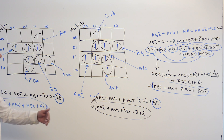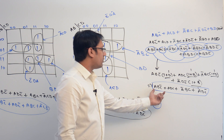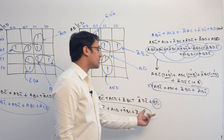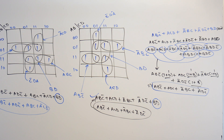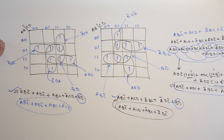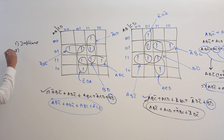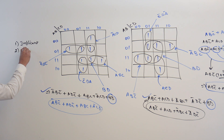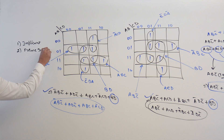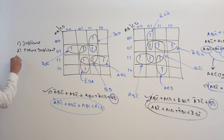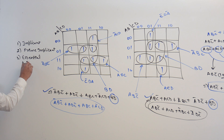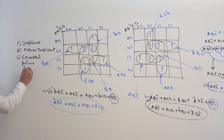Now, to understand why we are having this BD in this particular expression and how we can minimize it, we need three concepts. We need to learn what is an implicant, what is a prime implicant, and what is an essential prime implicant.